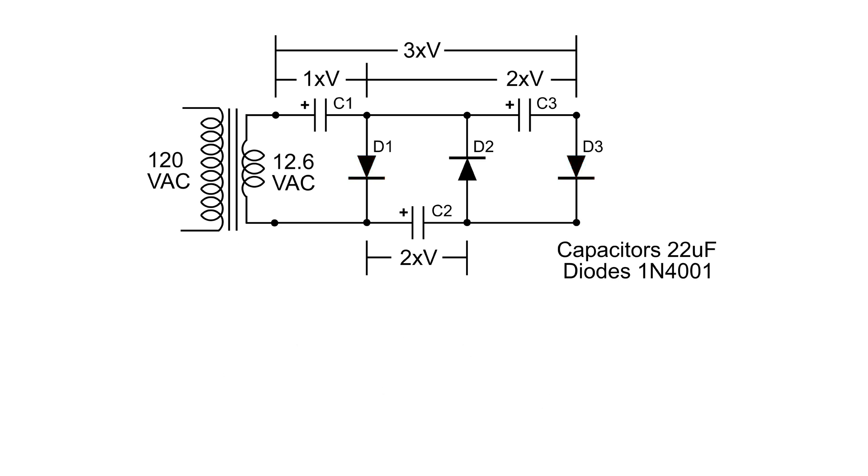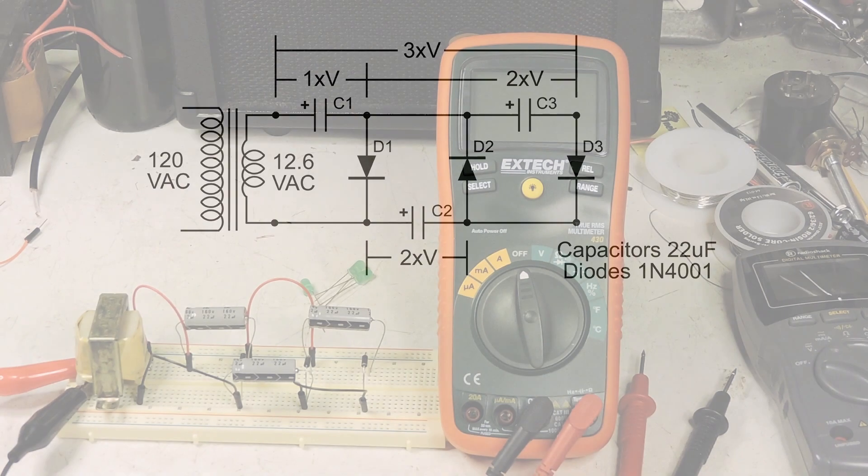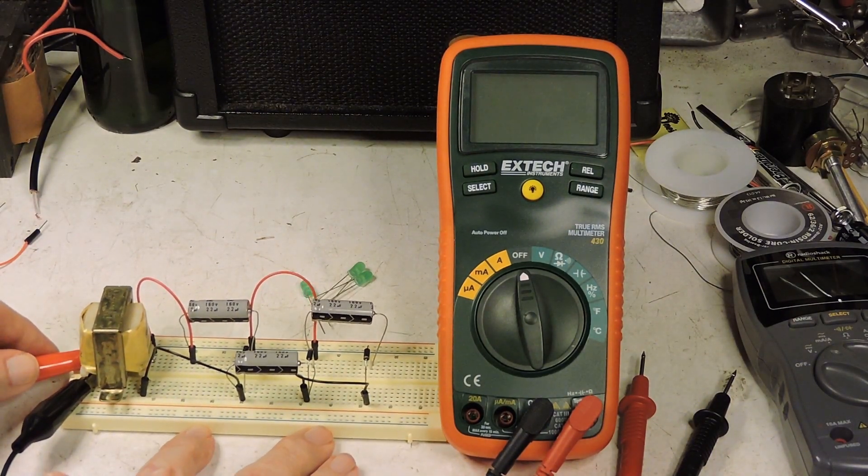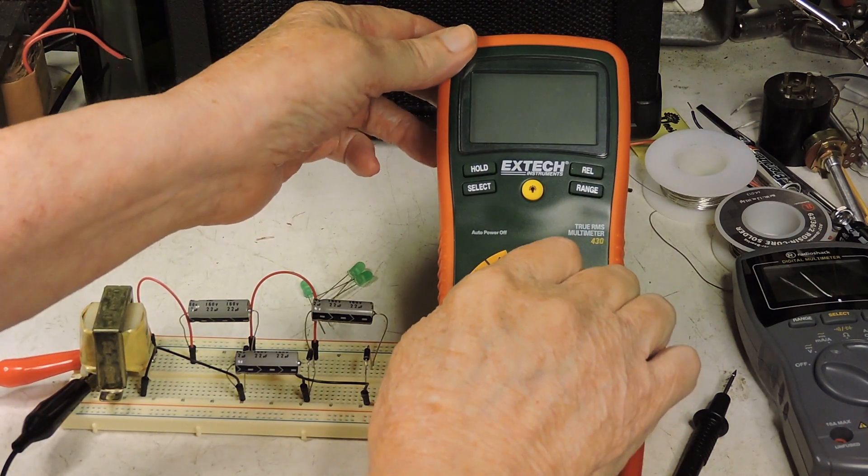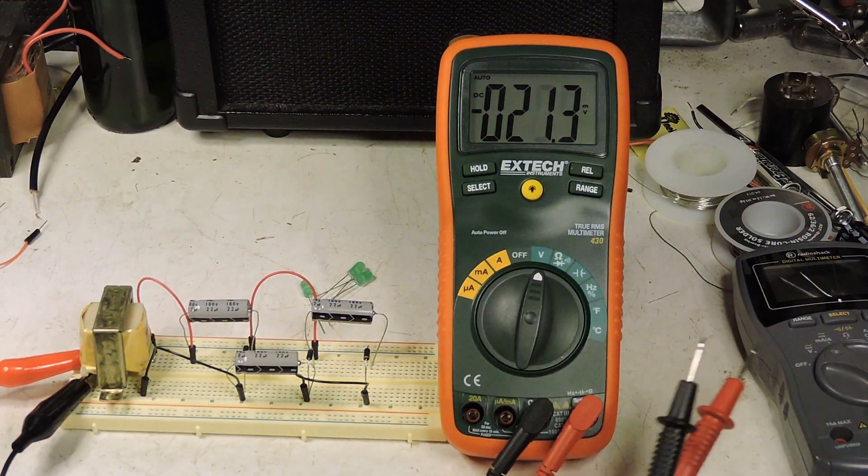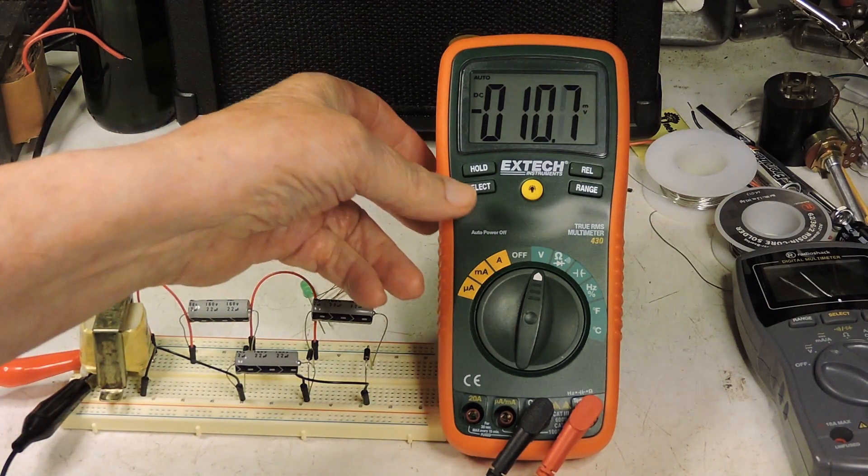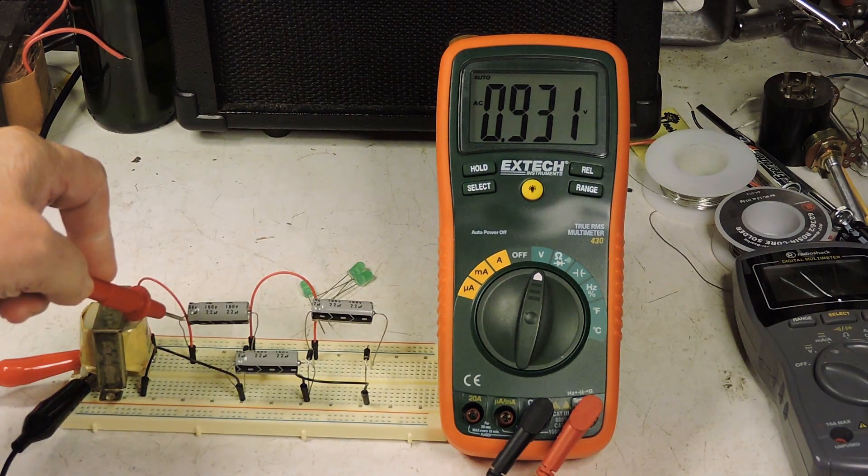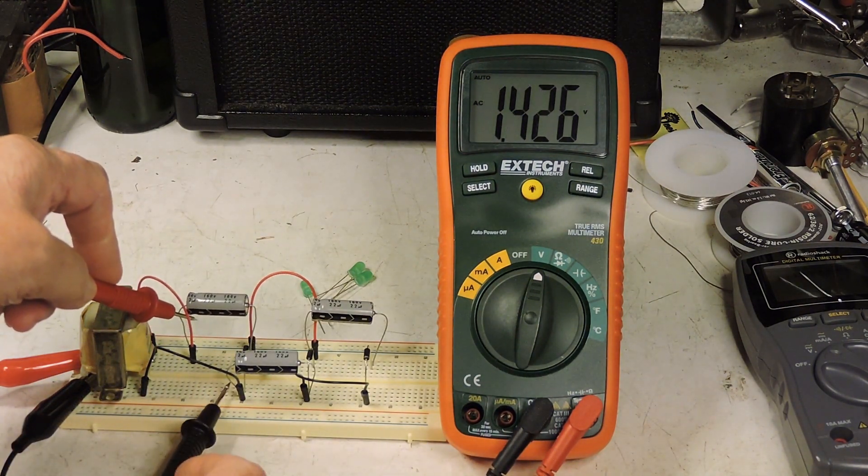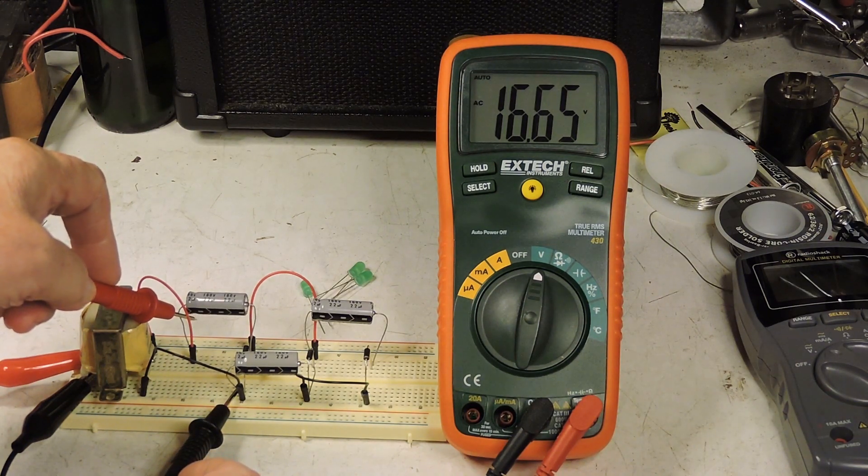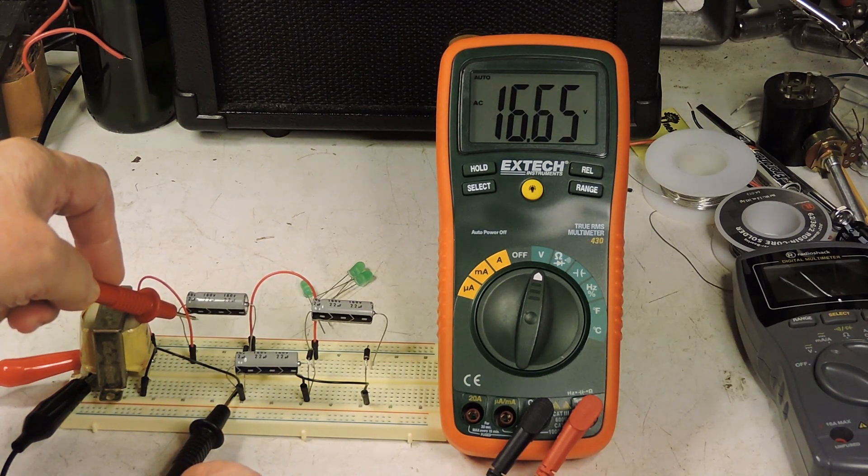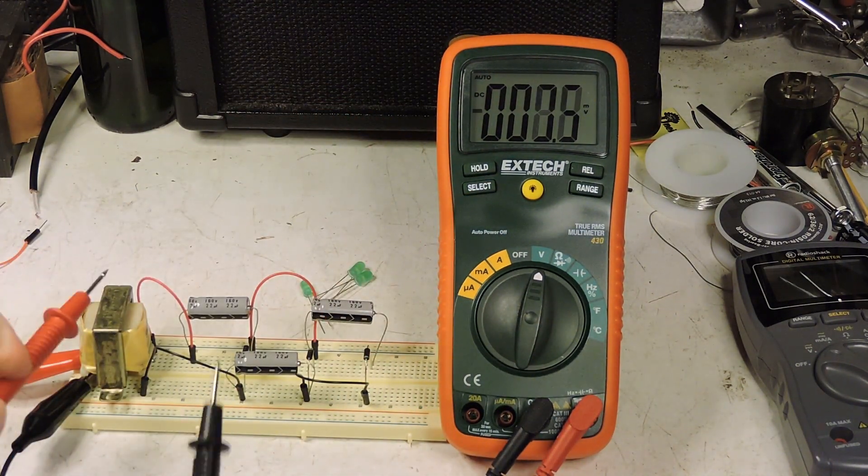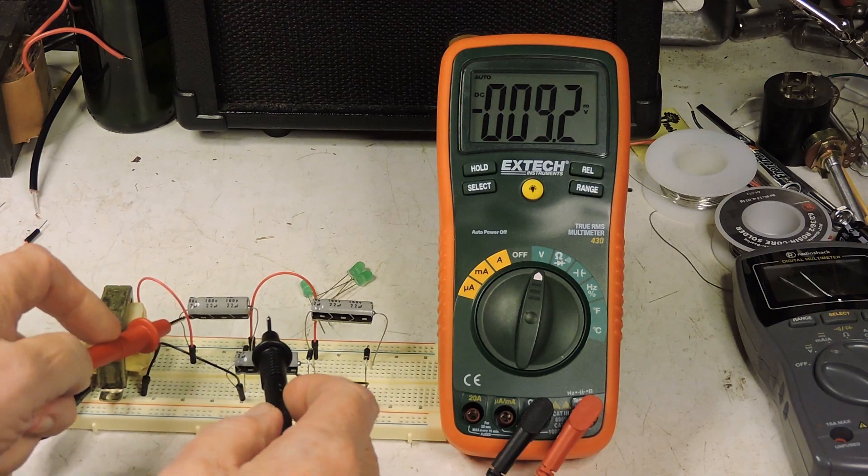Let's measure some voltages. The voltages are going to read high because there's no load on this. Let's change this to AC and measure the AC voltage at our little 12 volt transformer. We're just putting out about 16. Back to DC, let's read the voltage across C1.